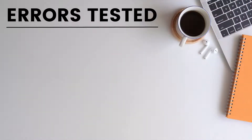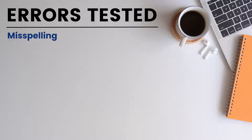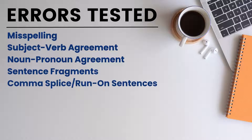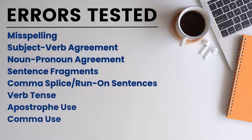The bots were tested on their ability to recognize and correct eight common errors in student writing: misspelling, subject-verb agreement, noun-pronoun agreement, sentence fragments, comma-splice run-on sentences, verb tense, apostrophe use, and comma use.